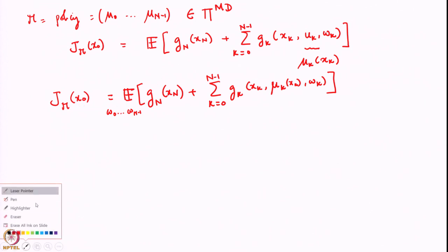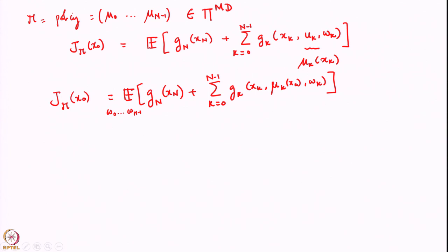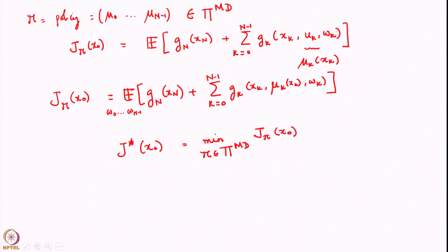So the stochastic control problem we are faced with is to find what is the optimal policy in a certain class of policies. The class of policies we are considering is the class of Markov deterministic policies, and the problem becomes to find the optimal cost J*(x_0) as a function of the initial state - the minimum over all policies in the class of Markov deterministic policies.